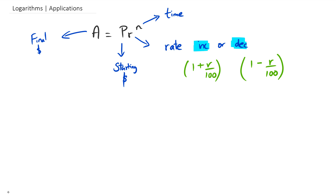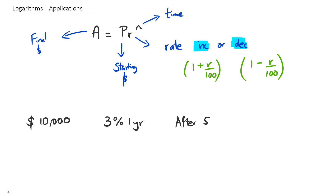The best way to do it is to work through a couple of questions. Let's say you have $10,000 and you go to the bank and do a term deposit, and they say the interest is 3% for one year. What we're trying to figure out is: after five years, if you just leave the money and keep reinvesting it every year, how much do you actually have after five years?